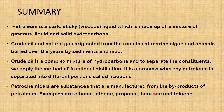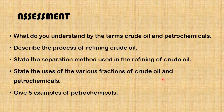Petrochemicals are substances that are manufactured from the byproducts of petroleum. Examples are ethanol, ethane, propanol, benzene, and toluene. Before we go, I wanted to pause this video and have you attempt to answer some questions to know how much of the lesson you have absorbed. I'll see you again in the next lesson.